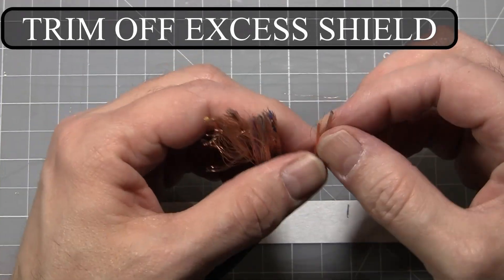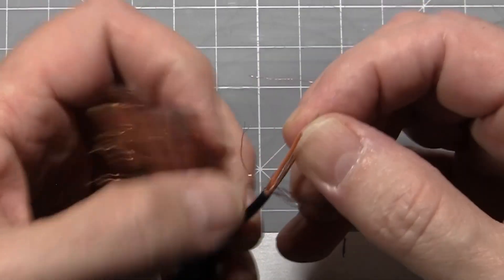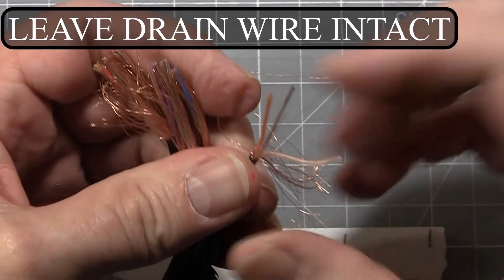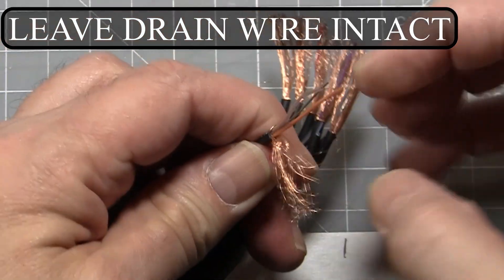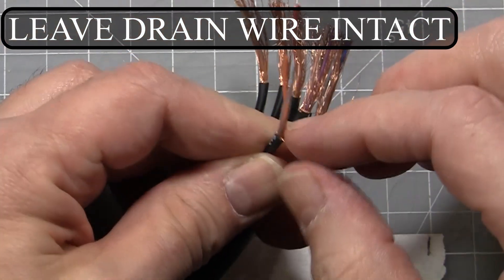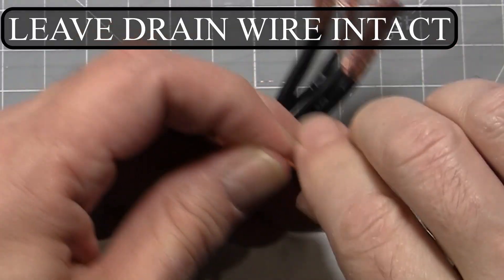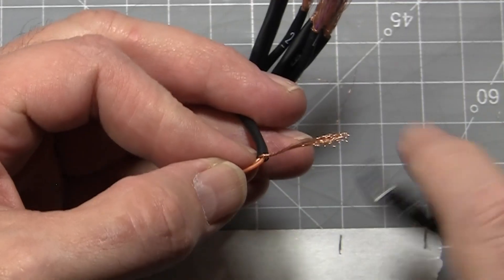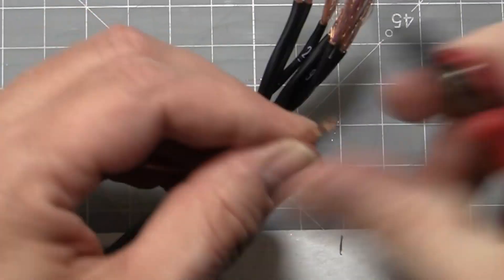On multi-channel Mogami, I cut off the copper shield, leaving only the single drain wire or ground wire that later I'll cover with Teflon tubing. Some people like to put shrink tubing on the ground of the shield. That's fine. I just think Teflon is a little bit neater.